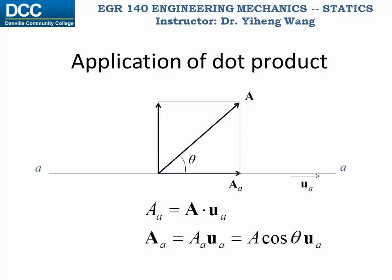Or we can use dot product to find the projection vector of any vector along a specified axis. Note, uA is the unit vector along the A axis.